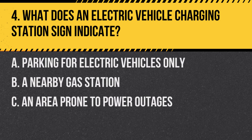Question 4: What does an electric vehicle charging station sign indicate? A. Parking for electric vehicles only. B. A nearby gas station. C. An area prone to power outages. Answer: A. Parking for electric vehicles only. This sign is used to designate parking spaces equipped with electric vehicle charging facilities.